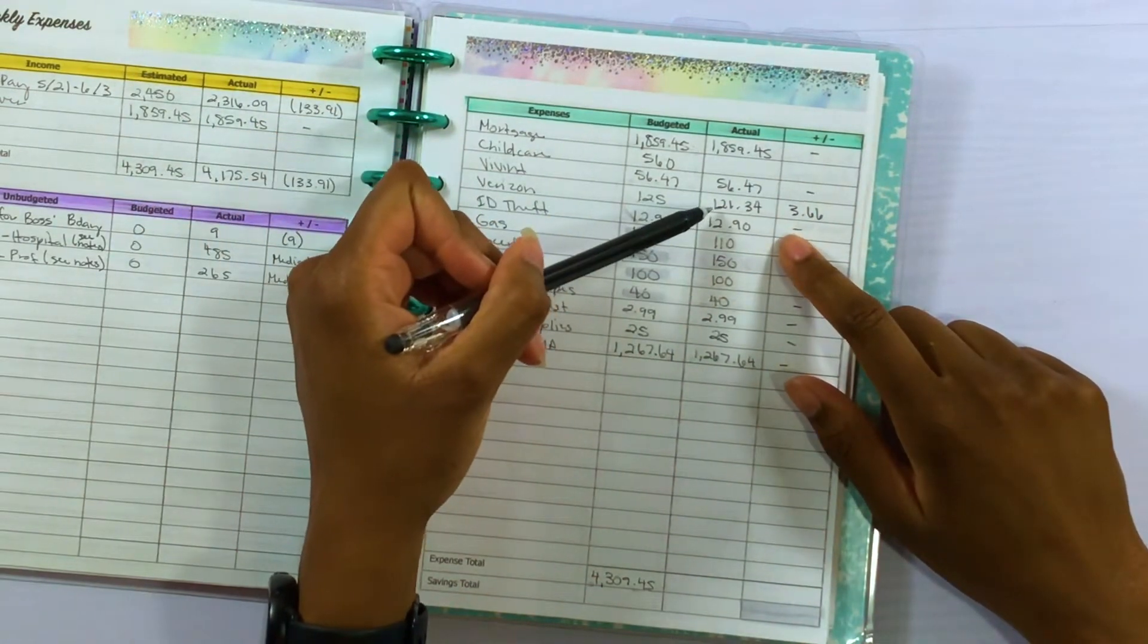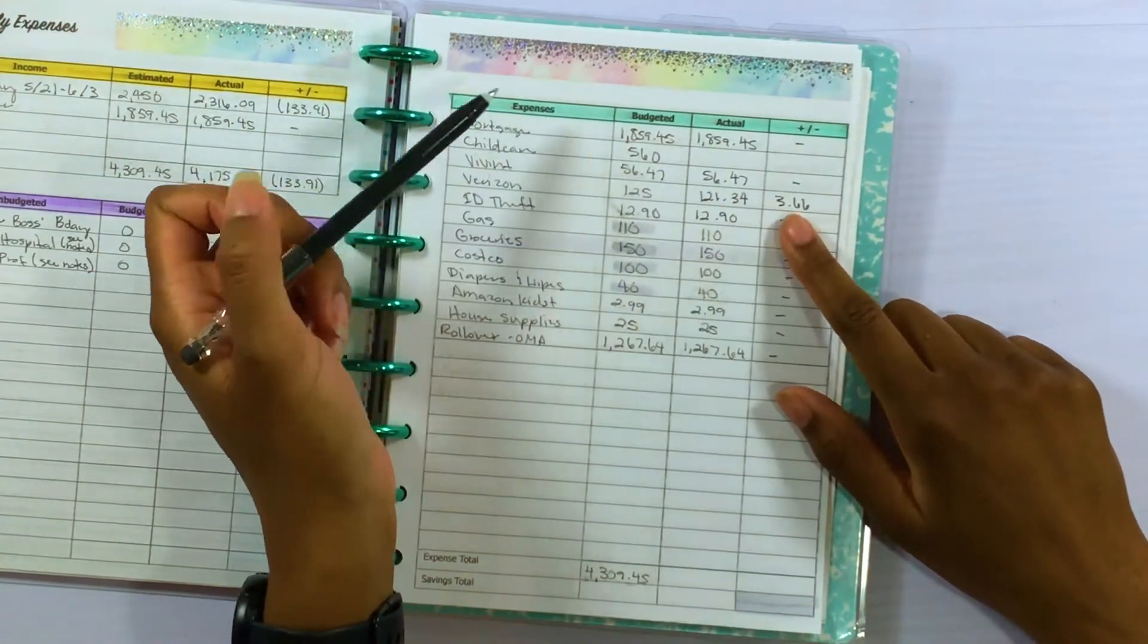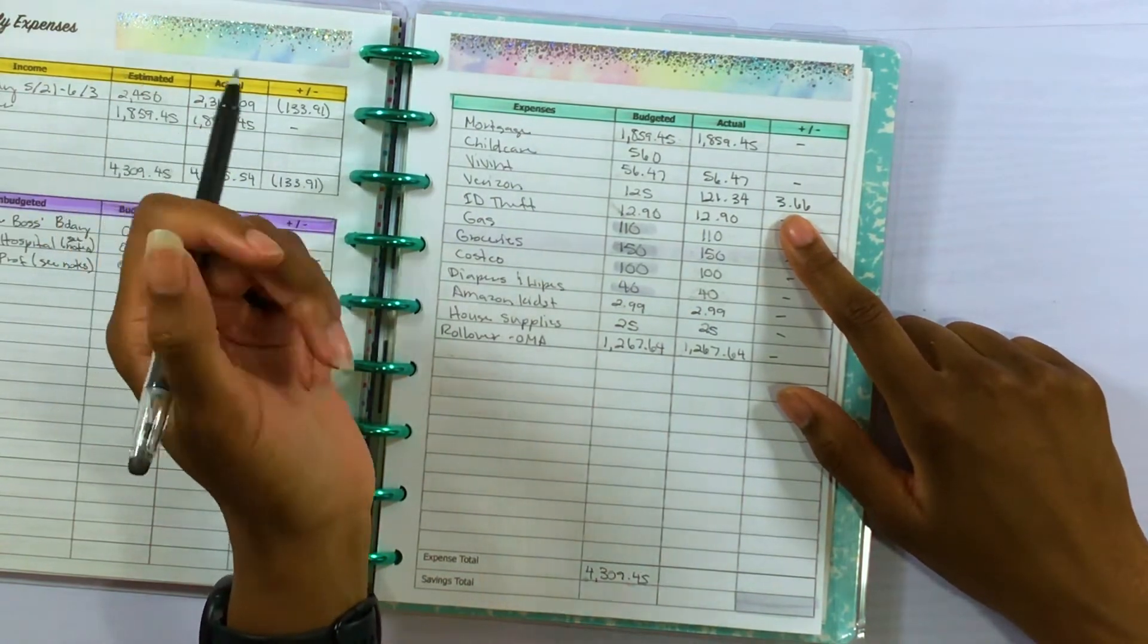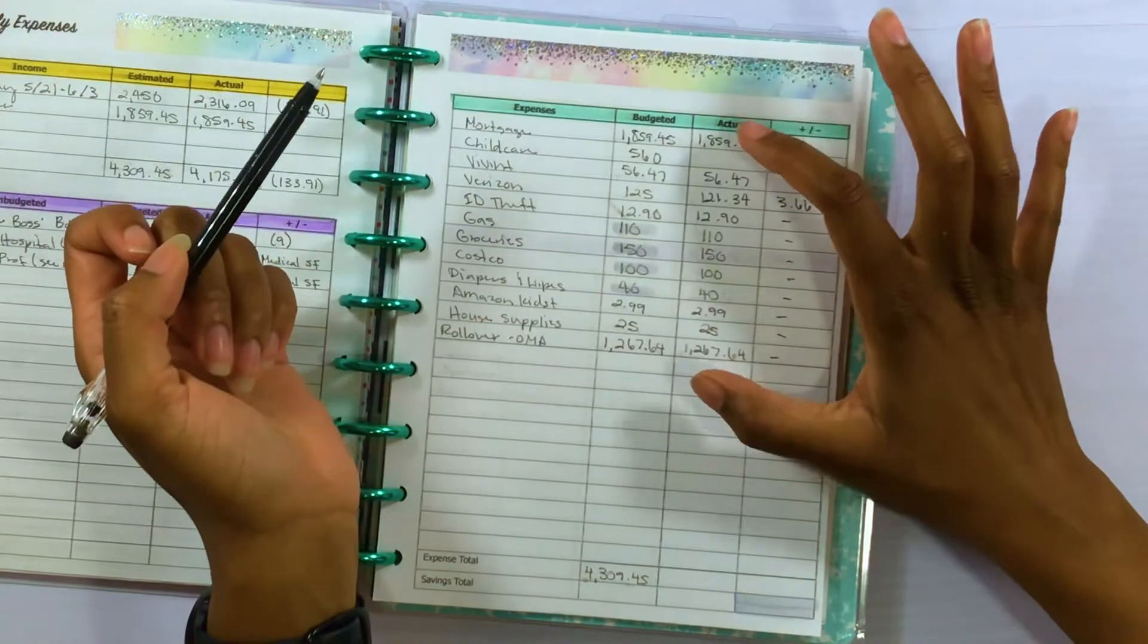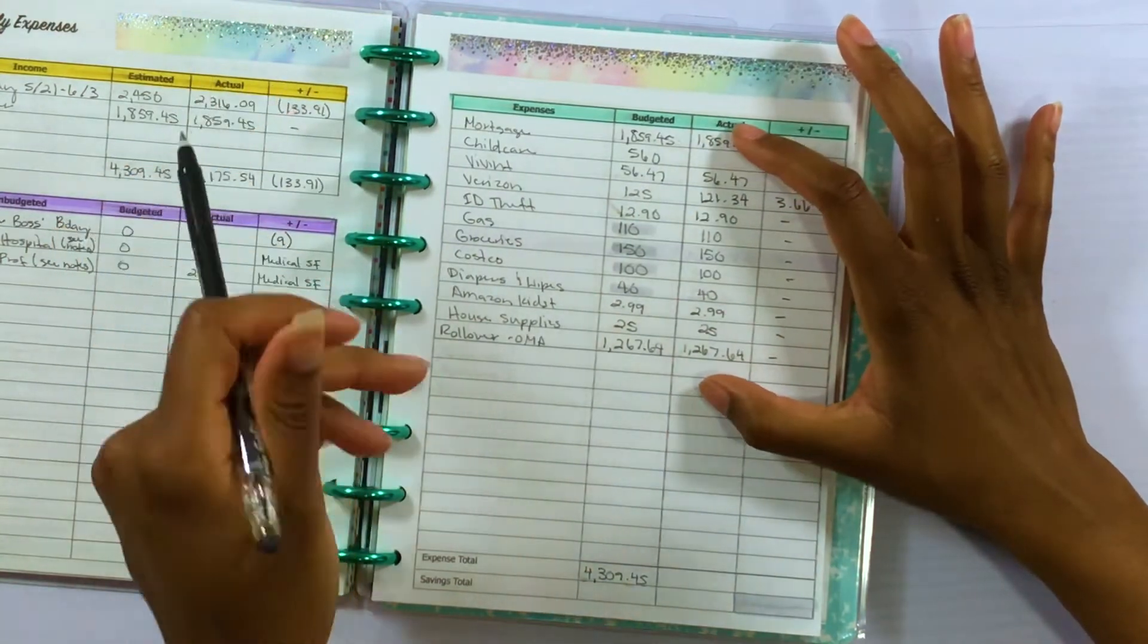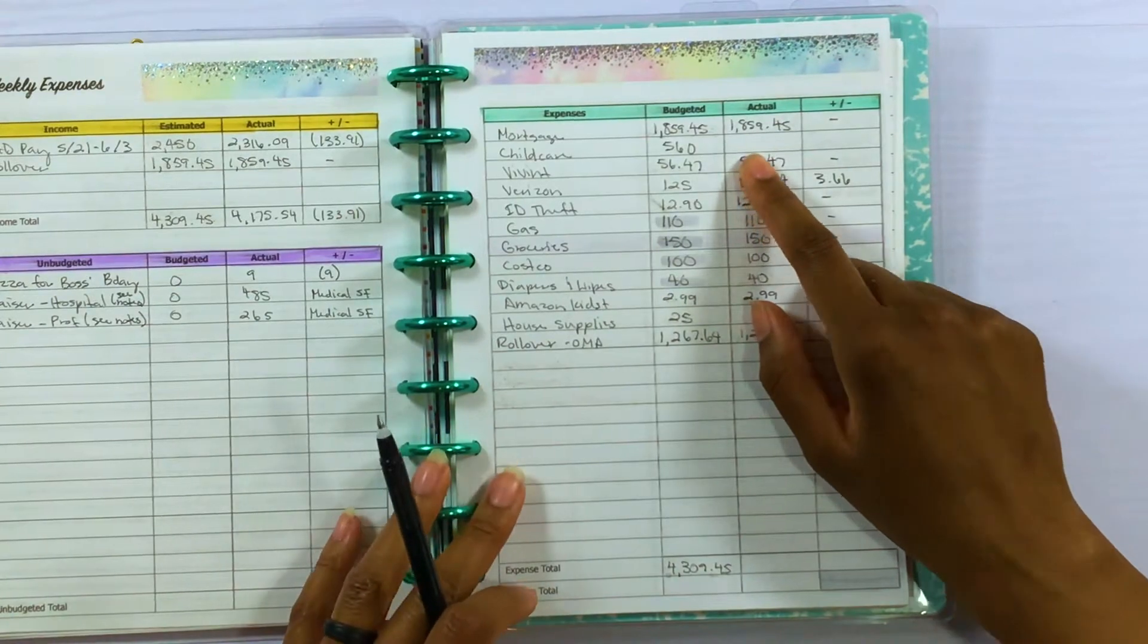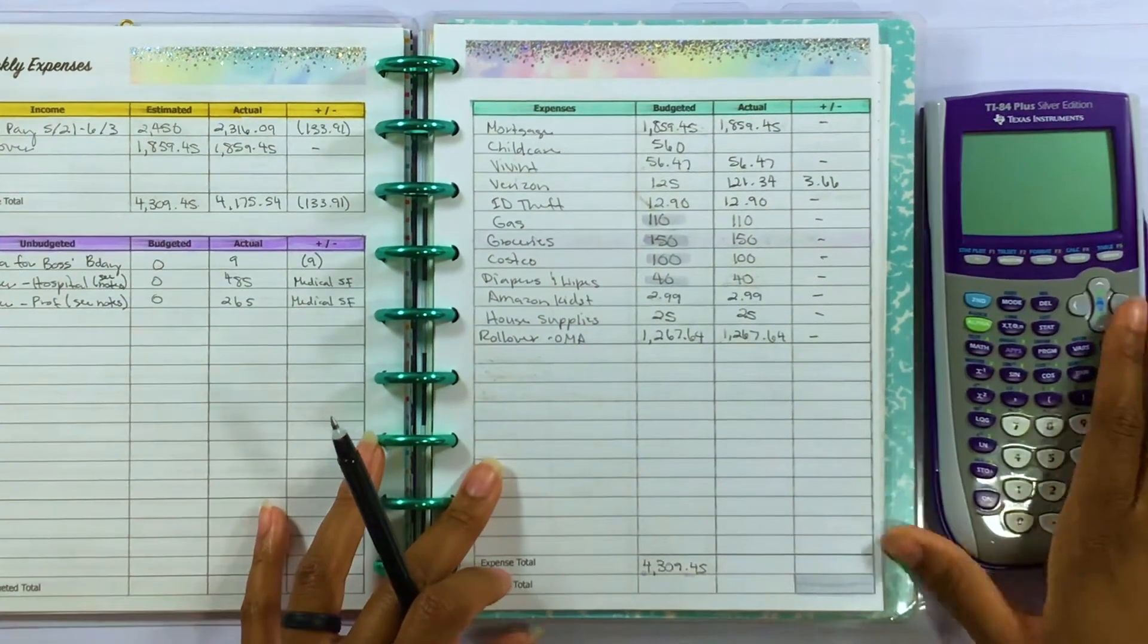So let me go ahead and add up the actual expenses so I can find out how much we were able to put towards child care. This child care is a sinking fund.